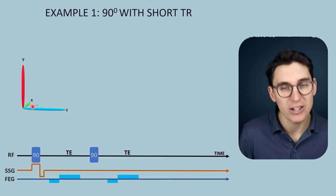In gradient echo pulse sequence diagrams, an alpha symbol is used to indicate that varying flip angles can be set. In spin echo imaging, larger flip angles are generally used, but not always 90 degrees — and in gradient echo, much smaller flip angles are used because of this short TR.